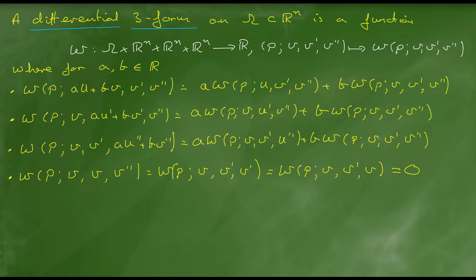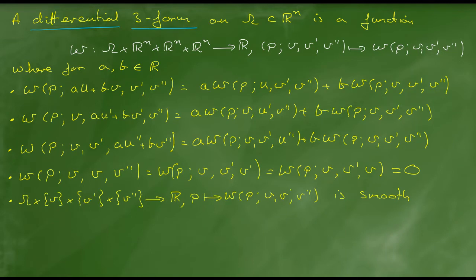And if the first and last input vectors are identical, then the value of omega has to be zero. And in order to justify the term differential, we can fix three input vectors. For arbitrary fixed input vectors V, V' and V'', we can construct a function which takes a point P in the domain of definition and returns the real number omega of P, V, V', V''. And that function has to be smooth.